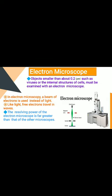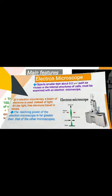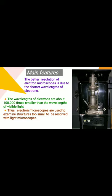Some main features of the electron microscope include better resolution, due to the shorter wavelength of electrons. The wavelength of electrons is about 100,000 times smaller than the wavelength of visible light. Therefore, electron microscopes are used to examine structures that are too small to be resolved with the light microscope.